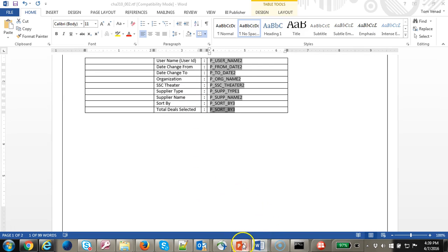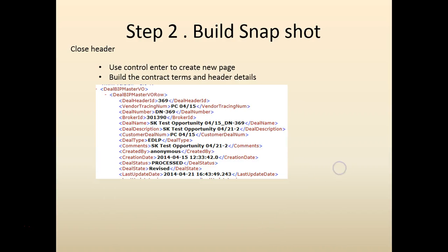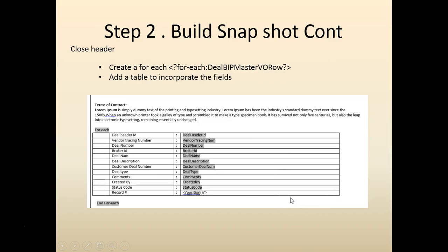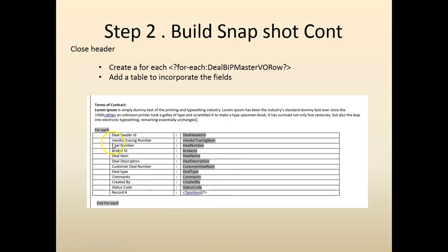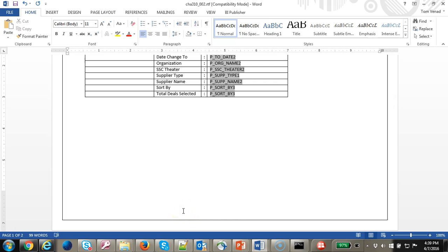Let's go ahead and go to the next step. We are going to create a three-page report. The next page is going to have the header details of the contract. In our example we have an XML file with certain details. Let's build a table and add those details. We're going to build a table for each main row — a contract table.